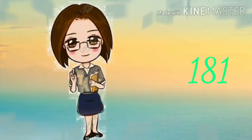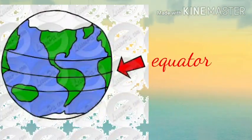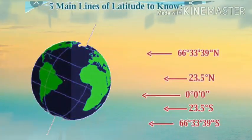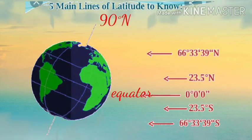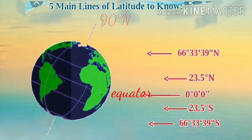There are 181 latitudes. Among the latitudes, the equator is the longest and the most important latitude. The latitudes are measured in degrees and the equator is at zero degree. The north pole is at 90 degree north and the south pole is at 90 degree south.